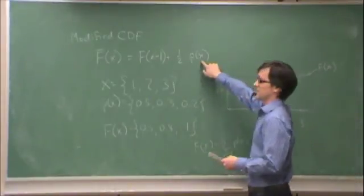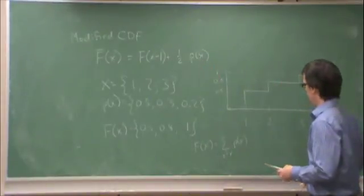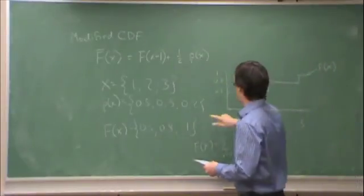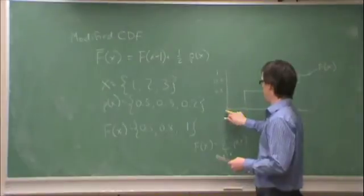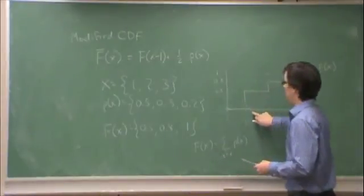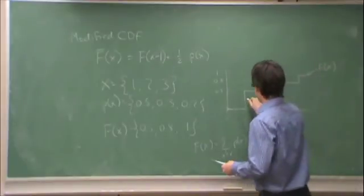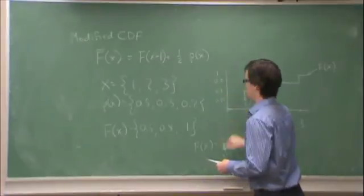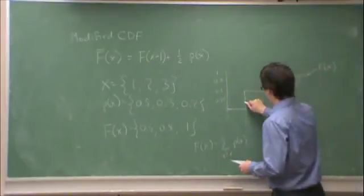f bar of x can only be defined over the integers, because p of x is only defined over the integers. But, what is it? So, at 1, I have f of x minus 1, f of x minus 1, in other words, f of 0 is 0, plus one half p of x. So, it's 0.25. In other words, it's halfway up this interval.